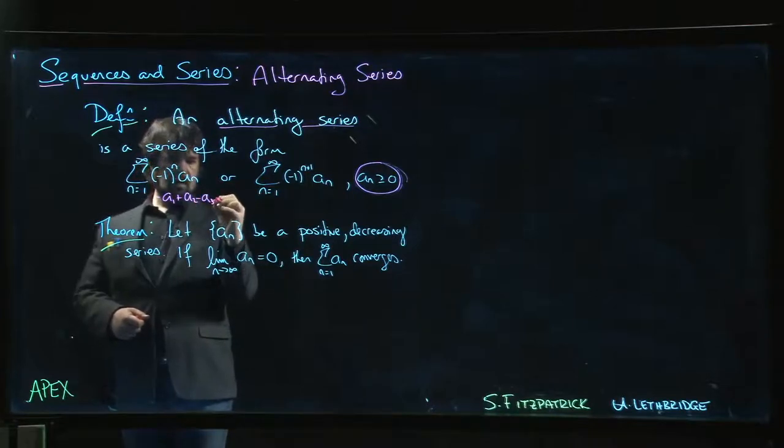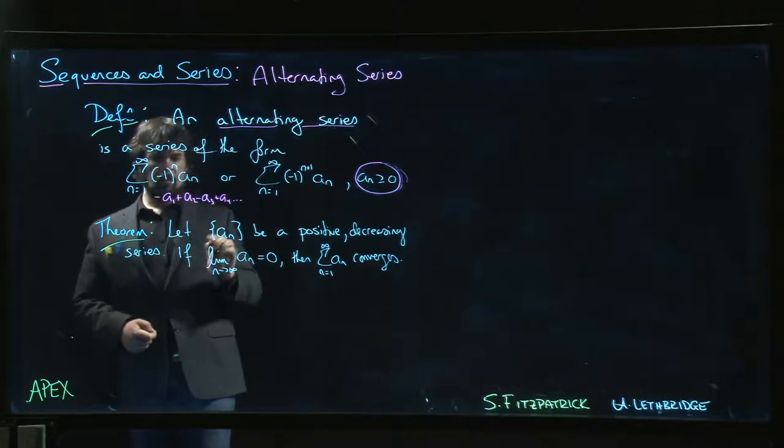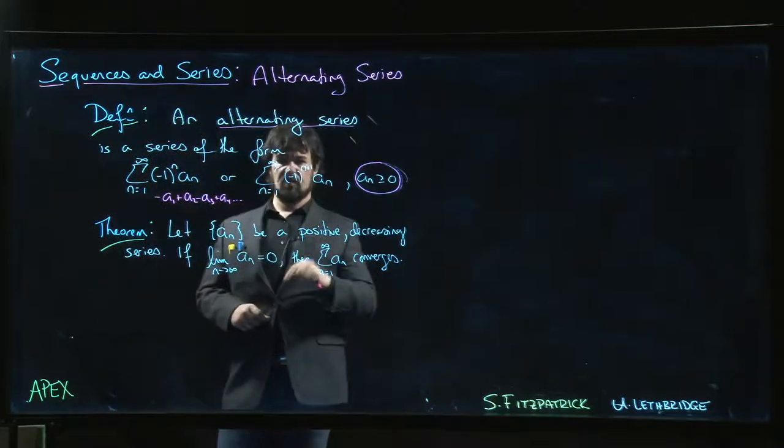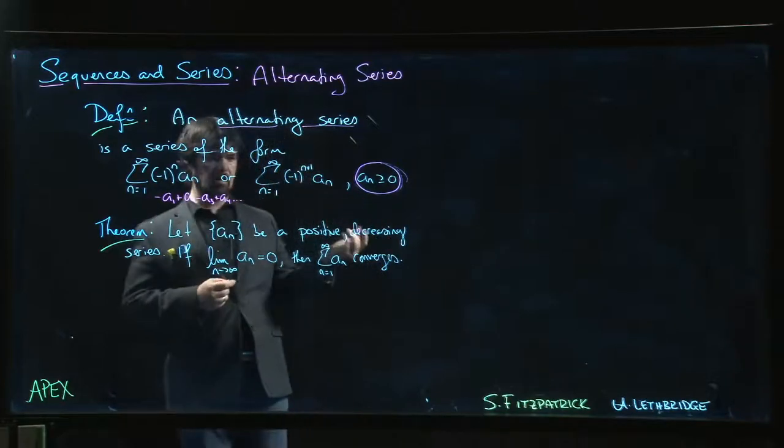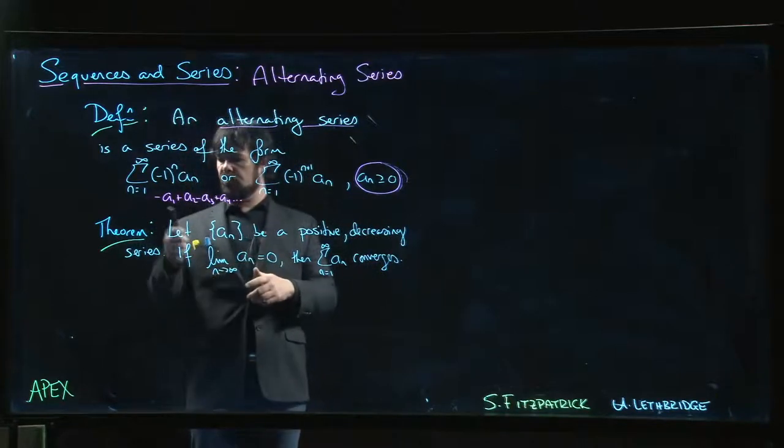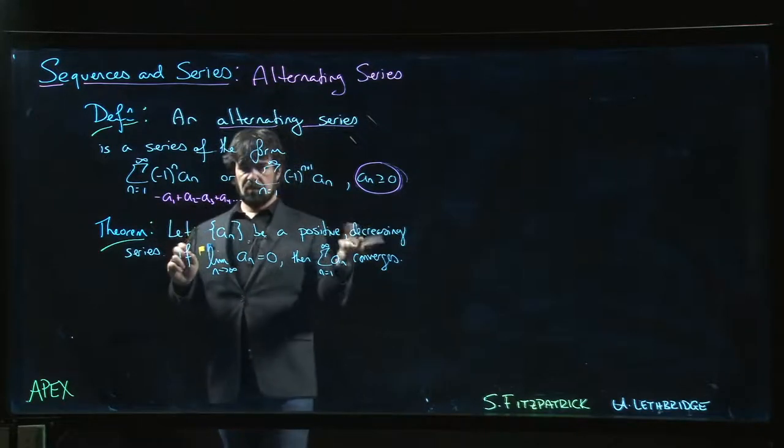Minus a_3 plus a_4, and so on—the sign changes. If you want the first term to be positive, then you do minus one to the n plus one. Either way, we consider it an alternating series whether the first term is positive or negative. What matters is that the sign alternates between positive and negative.